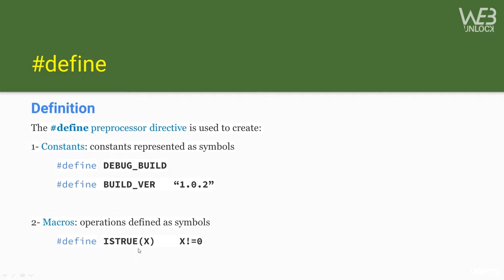The second use of #define is for macros. For example: #define IS_TRUE(x) ((x) != 0). The way to distinguish a symbolic constant from a macro is by whether it has arguments — no arguments means symbolic constant, one or more arguments means macro. It's a convention to use ALL CAPITAL CASE for macro and constant names. This is standard practice so that other developers can quickly identify them as macros when reading your code.